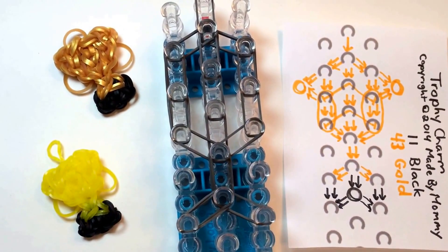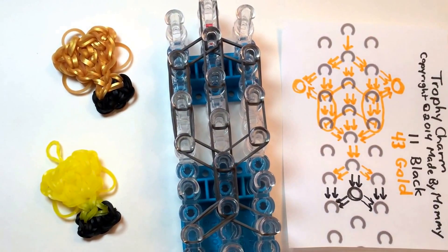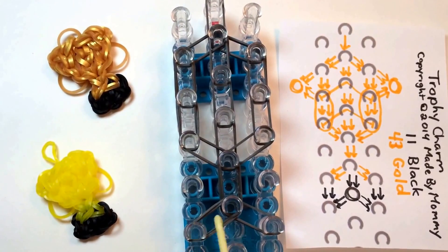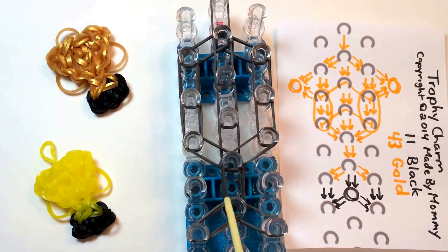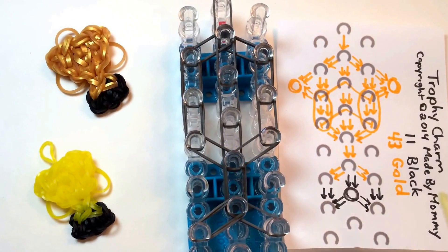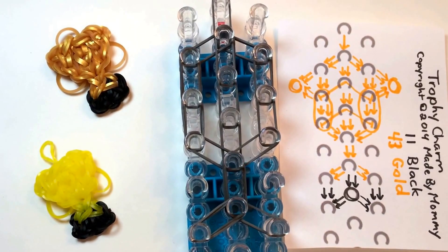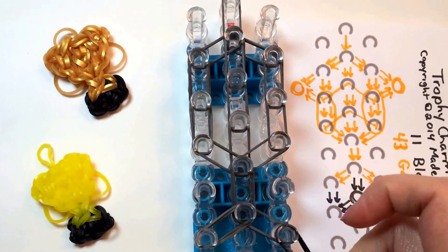If you wanted to just make a trophy without a base, you would stop here and add a cap band on each of these and begin bringing all the rubber bands together. I like the base though. I think it makes it look like a much more impressive trophy.